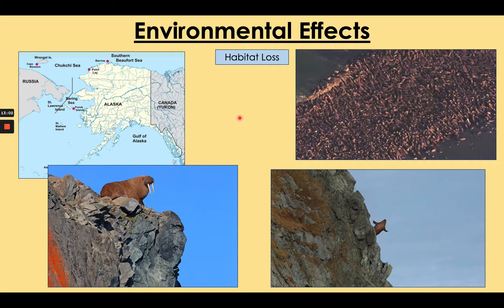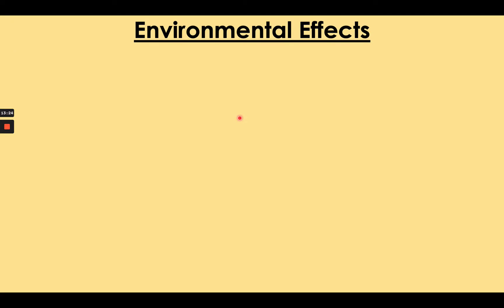It's not just walruses affected by habitat loss — it's many species all around the world, such as the polar bear and the penguins of Antarctica. But this particular example is quite emotionally affecting and shows clearly the impact of climate change on habitats of species near the north and south poles. Coral bleaching is another significant effect of climate change, and it's happening under the seas.